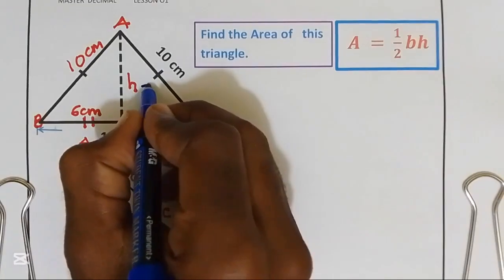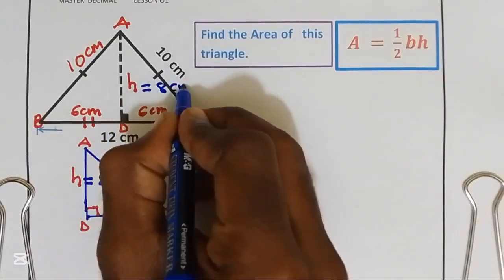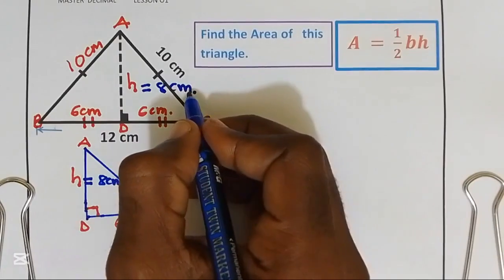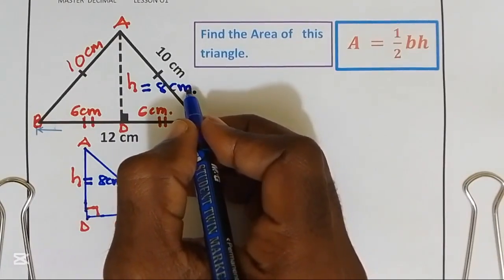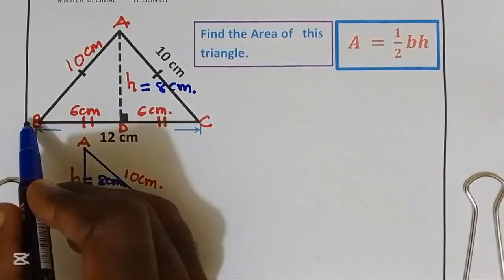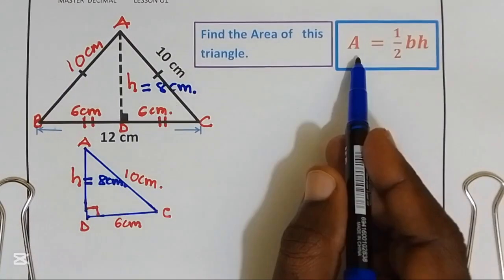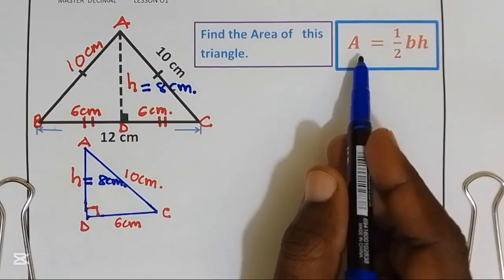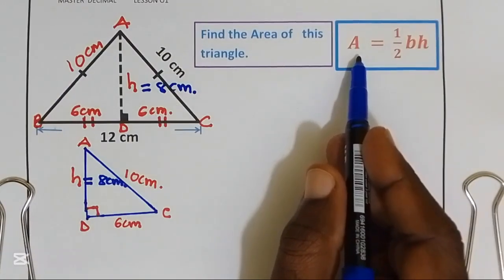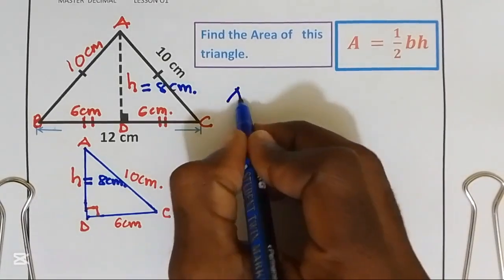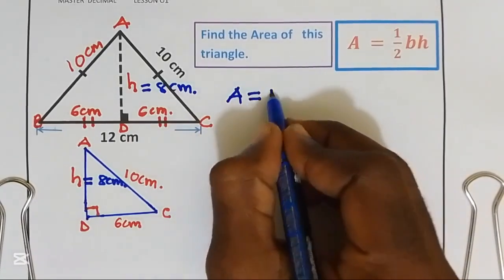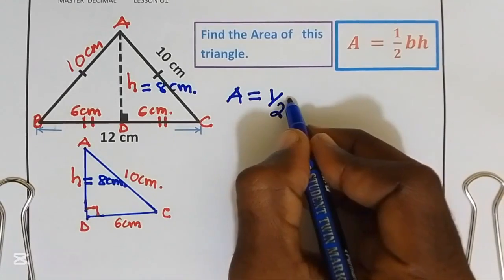Our h is equal to 8 centimeters. From here we can easily find the area, because for triangle ABC we already have the base of 12 and the height of 8. Let's apply the formula to find the area. Our area is equal to one-half multiplied by the base, which is 12, multiplied by the height, which is 8.